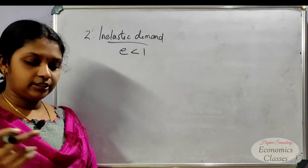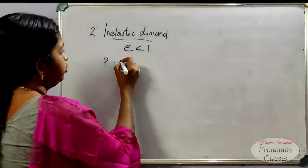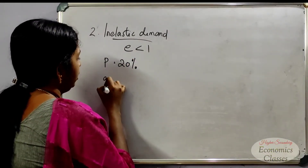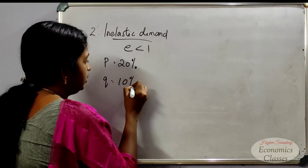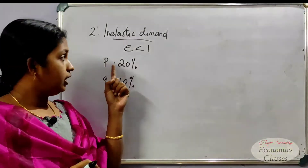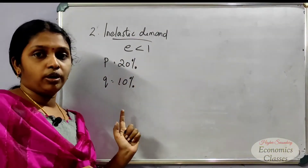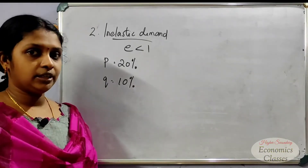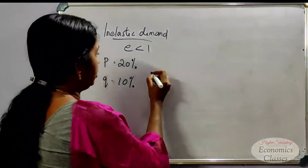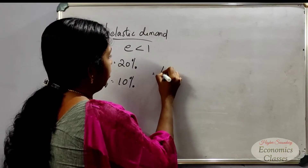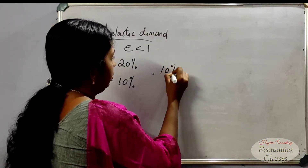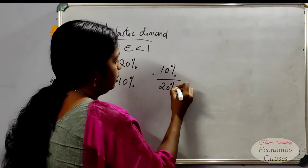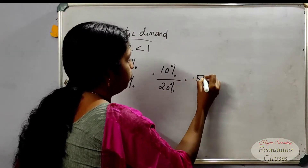For inelastic demand, for example, if price changes by 20% and quantity demanded changes by 10%, then elasticity equals 10 divided by 20, which is 0.5. This value is less than 1.